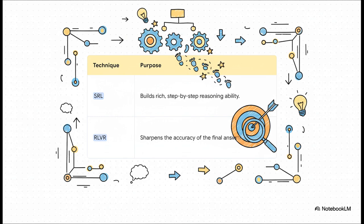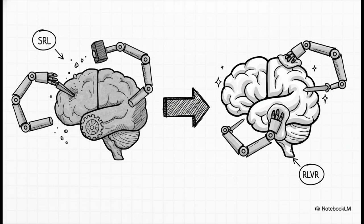Then you bring in another method, called RLVR, to really sharpen the accuracy of the final answer. It's a perfect partnership. This is honestly the best way to think about it. SRL is what gives the model's reasoning its fundamental shape and its logical structure.